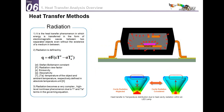Radiation is heat transfer in the form of electromagnetic waves between two separate objects. The governing law is more complex because it is nonlinear: q = sigma * F * epsilon * T^4 - alpha * T_a^4, where F is the radiation view factor, sigma is the Stefan-Boltzmann constant, epsilon is emissivity, and alpha is absorptivity. Radiation requires nonlinear analysis because temperature appears raised to the fourth power.